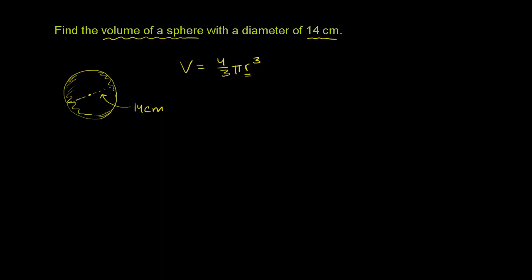So they've given us the diameter, and just like for circles, the radius of the sphere is half of the diameter. So in this example, our radius is going to be 7 centimeters.